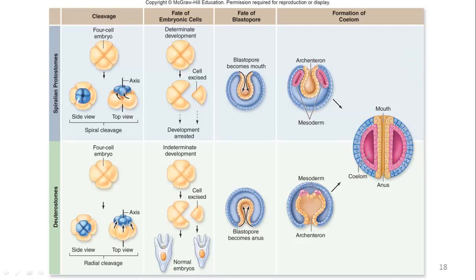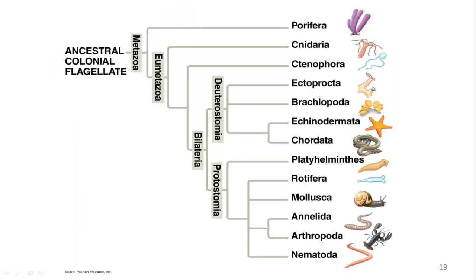That's our introduction to animals. We'll use these characteristics to differentiate different types of animals. Here's a diagram of invertebrates — which we already have a reference point for from lab and will be quizzed on next week — showing Deuterostomia and Protostomia, as well as Bilateria, reflecting bilateral symmetry and the other characters we've discussed.